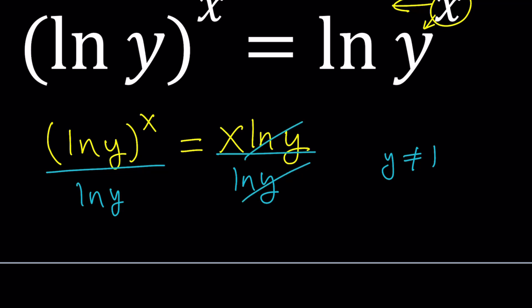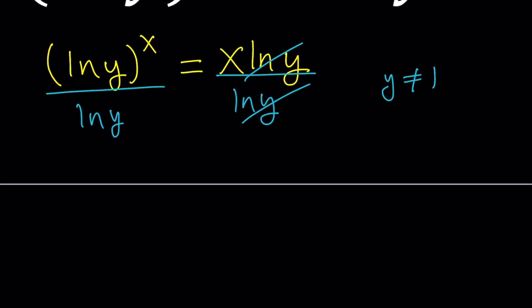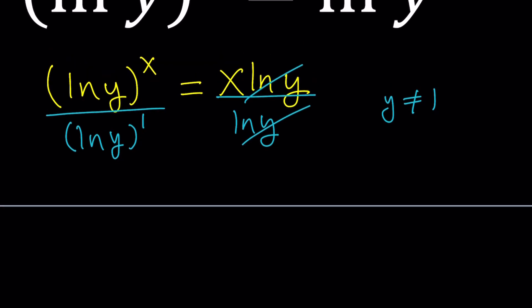ln y cancels out, and then we end up with something like this. Notice that this is ln y to the first power. So now we're dividing two powers with the same base. What does that mean? It means we're going to subtract the exponents. Let's do it. ln y is the base, and the new exponent is going to be x minus 1. We have x on the right-hand side. We're almost there.